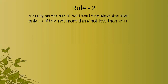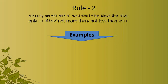In Rule 2, we look for 'only' used before a number indicating age or quantity. In a nutshell, if we find a number preceded by 'only', then we replace that 'only' by putting 'not more than' or 'not less than'.